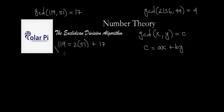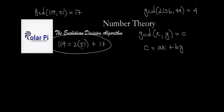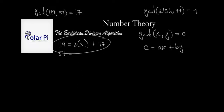By the way, every positive integer can be written in this quotient-remainder form. The first step of the division algorithm is always writing this line. The next step is to take the remainder from that line and write it in the same quotient-remainder form, but now involving the divisor. So we write 51 in quotient-remainder form involving 17.